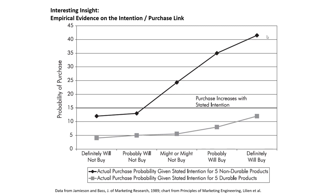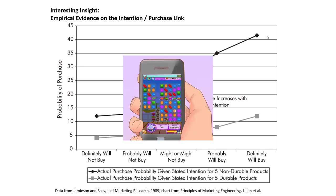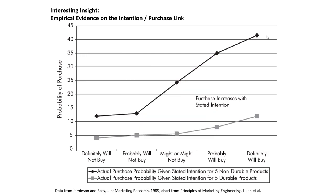For example, imagine we wanted to see how many people would actually download and play a free online mobile video game. In that particular context, do you think the relationship between stated purchase intentions and purchase probability — where 'purchase' here means download — would be stronger or weaker than the results we see here?